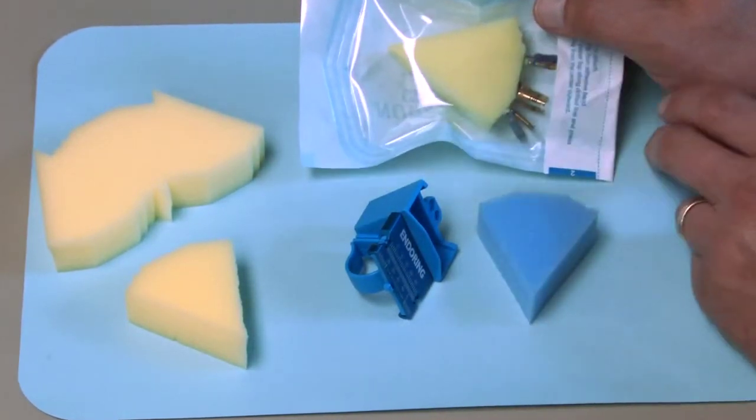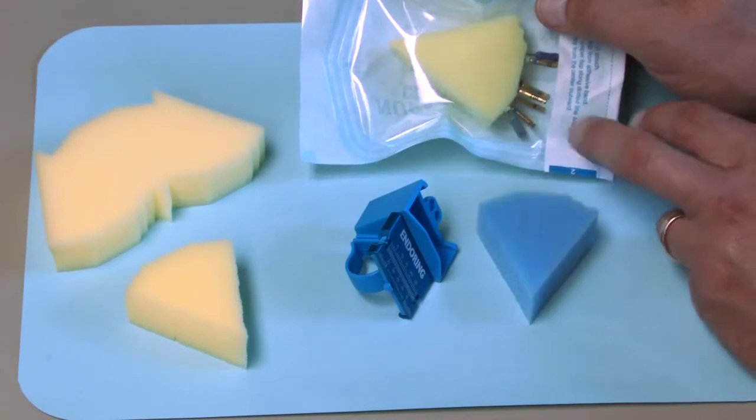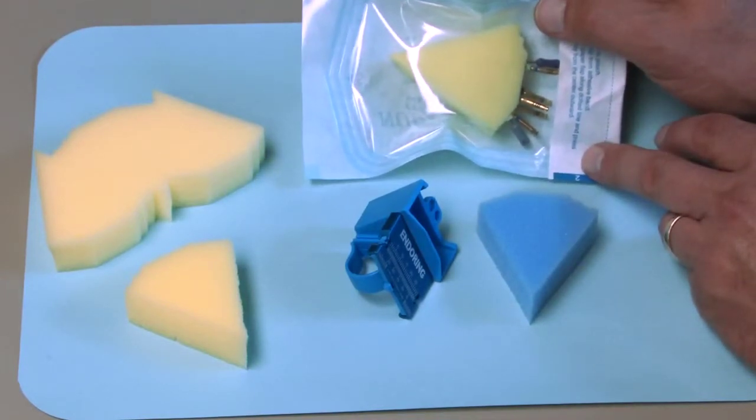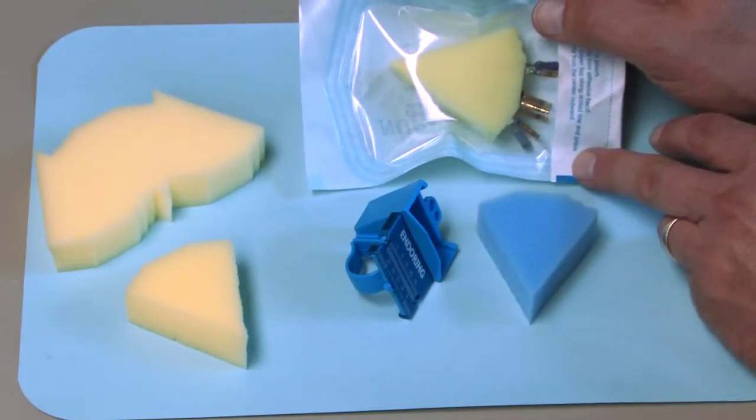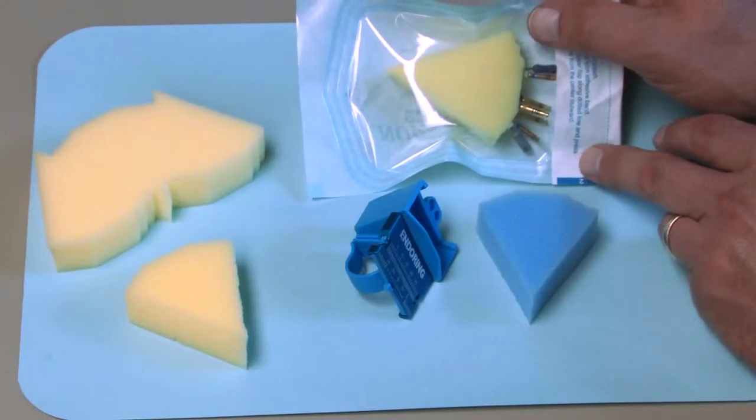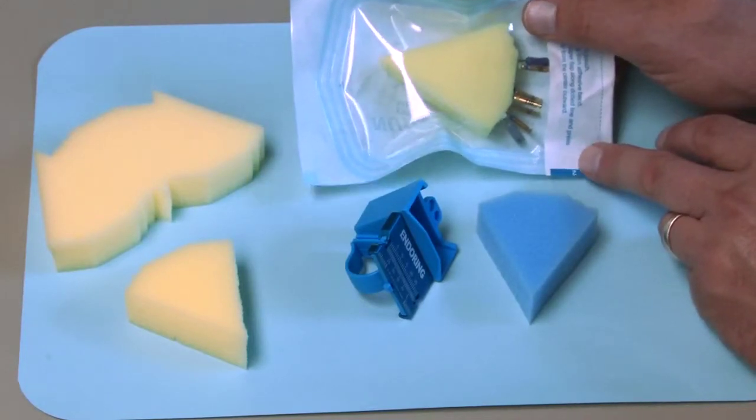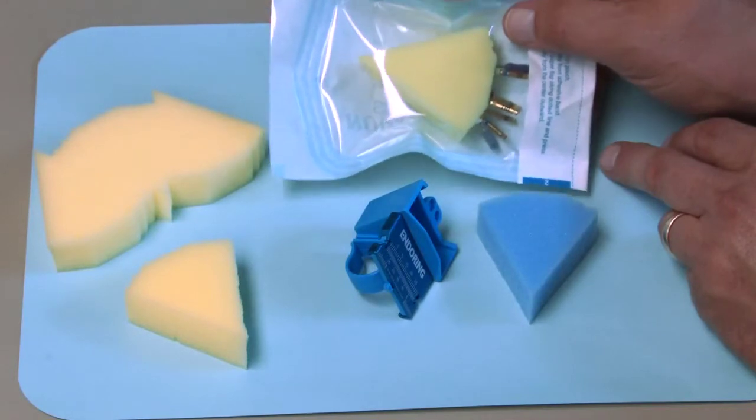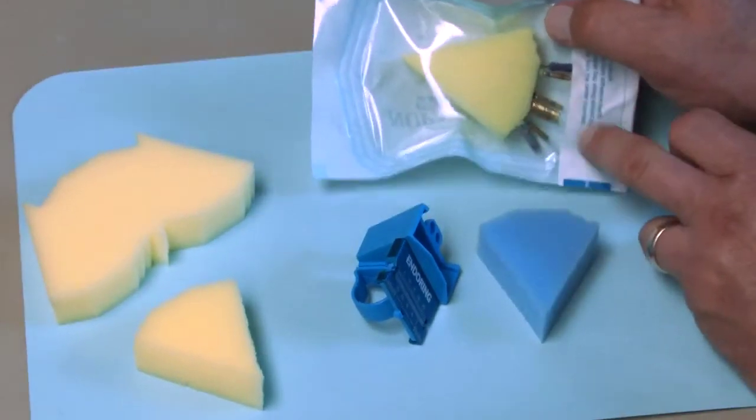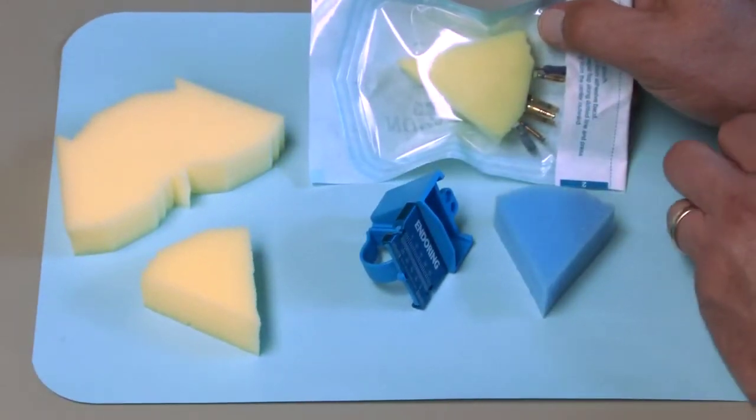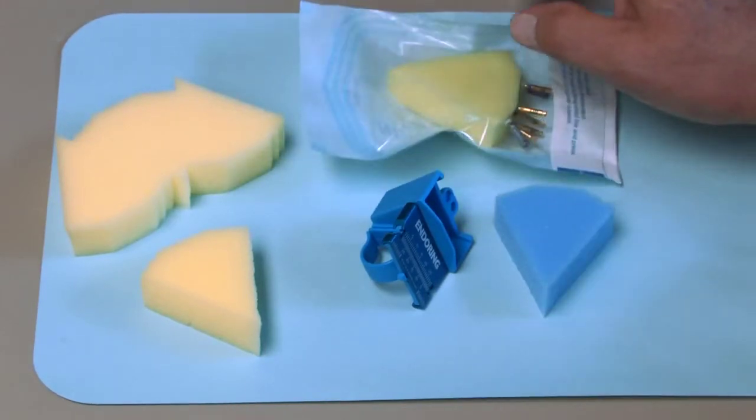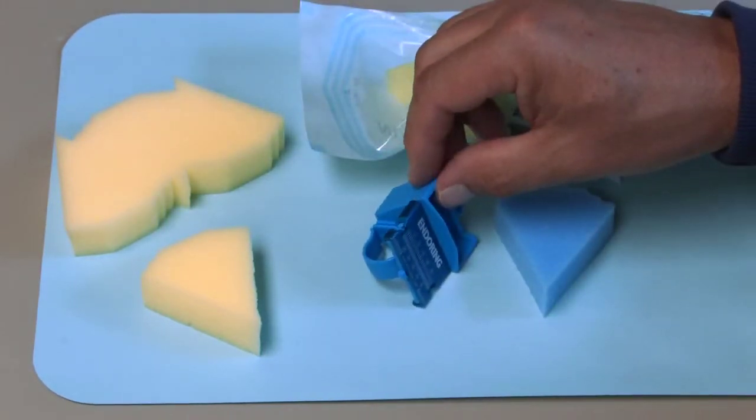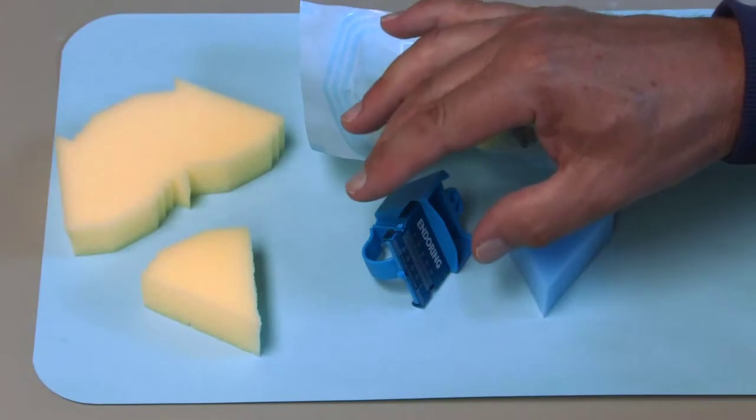We also recommend that you take clean files before a procedure, load them into the Jordco foam insert, then place them in a clear autoclave bag and process them. It is very important that you never use a Jordco foam insert more than once. Once you have processed the foam and the components, they can be delivered to the assistant or the doctor's work area fully processed and ready.